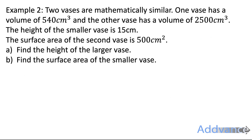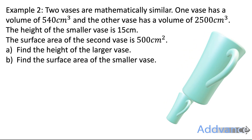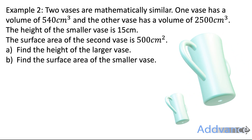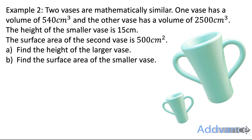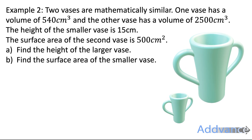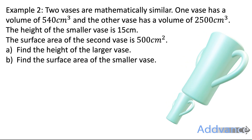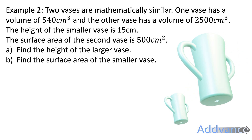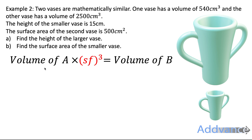Let's look at another example. Two vases are mathematically similar. One vase has a volume of 540 centimetres cubed and the other has a volume of 2,500 centimetres cubed. The height of the smaller vase is 15 centimetres and the surface area of the bigger vase is 500 centimetres squared. Find the height of the larger vase, and find the surface area of the smaller vase. We start by using the formula: volume of A times the scale factor cubed equals the volume of B.